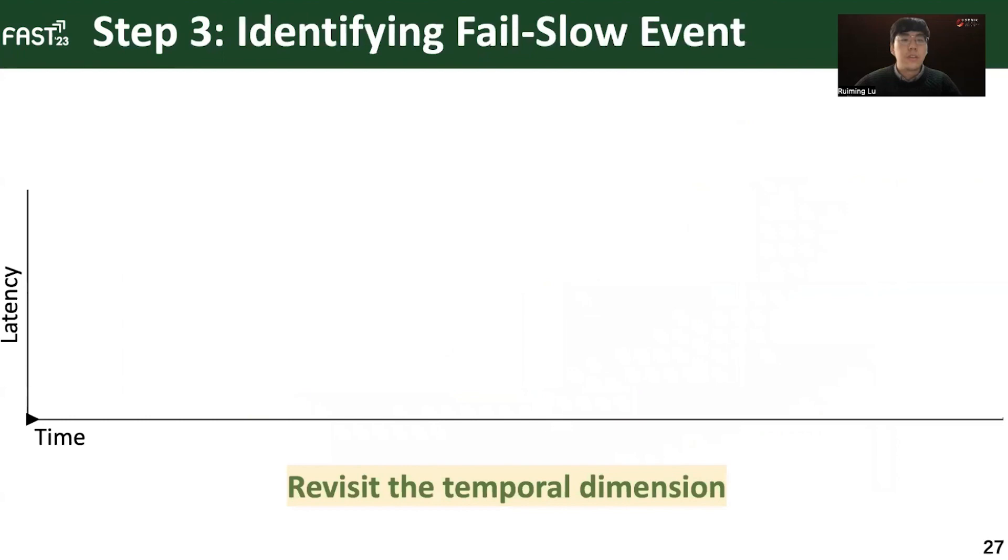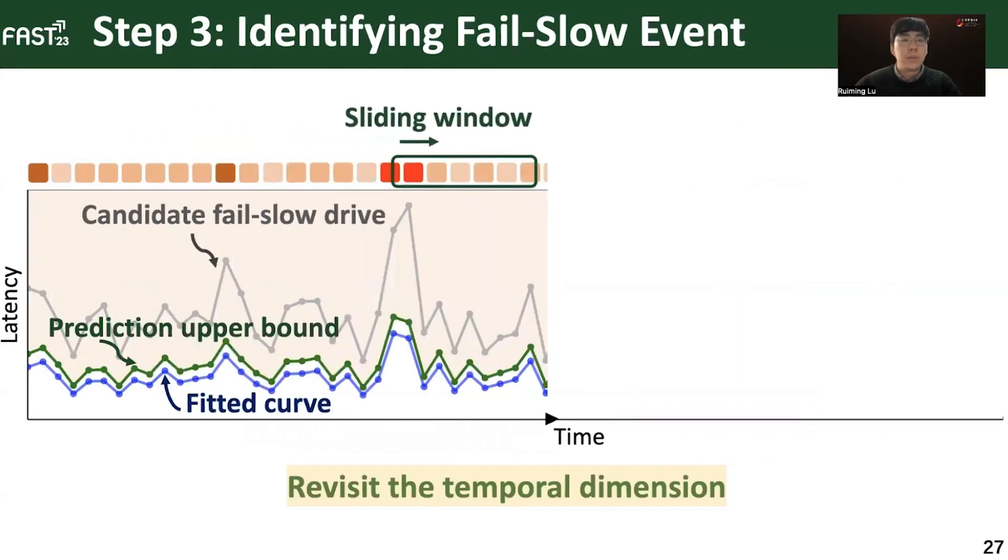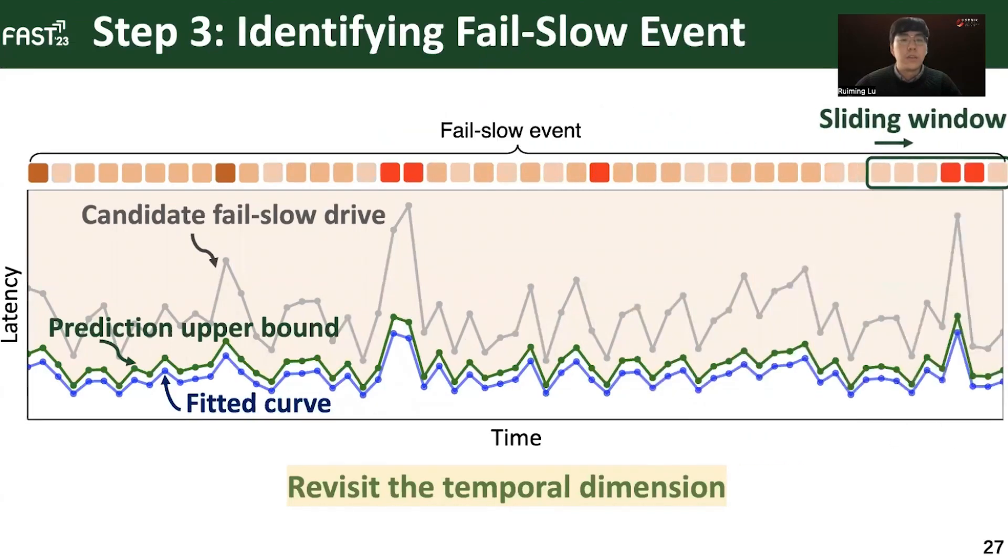Now, with such a statistically significant and adaptive threshold at hand, we identify the fail-slow event by revisiting the temporal dimension. We use a sliding window to identify fail-slow events similar to the peer evaluation approach. Here, we focus on two aspects of the fail-slow events, namely slowdown duration and slowdown degree. If a drive frequently has fail-slow events with a long duration and high slowdown ratio, then it is very likely to be a fail-slow drive.